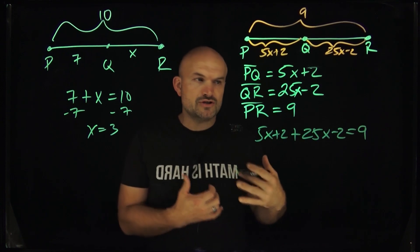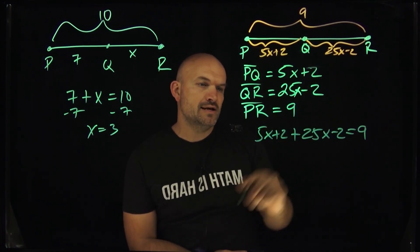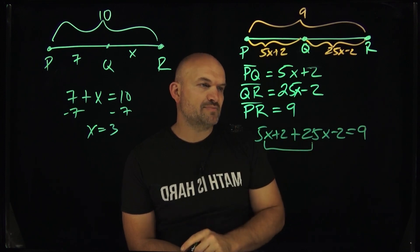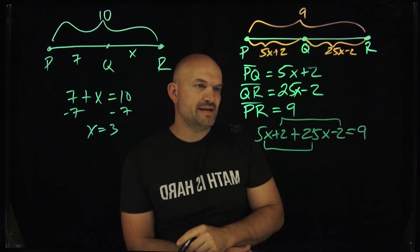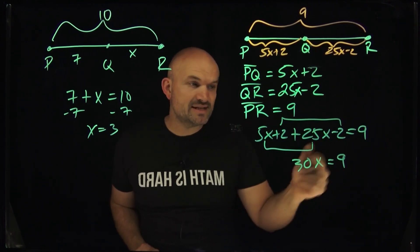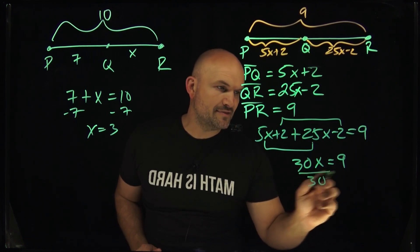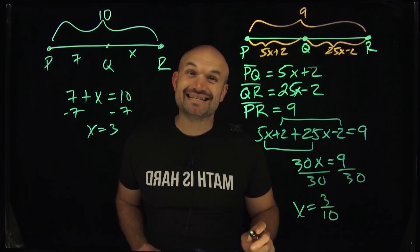Now we just need to use our solving equations technique. We have an equation, so now we can solve for x. In this case, I'm going to combine 5x plus 25x, which is going to be 30x. And 2 plus negative 2 is going to be 0. 30x equals 9. Now we just need to solve for x, so we'll divide by 30. And x is going to equal 3/10.